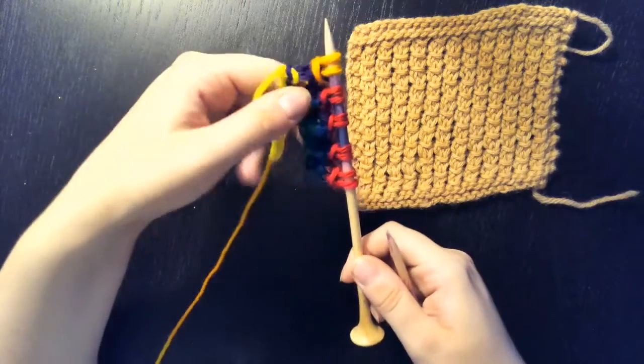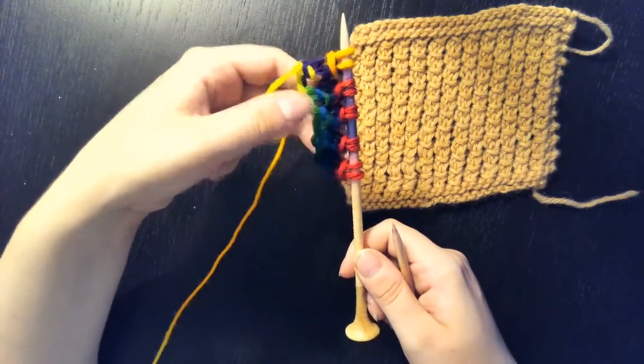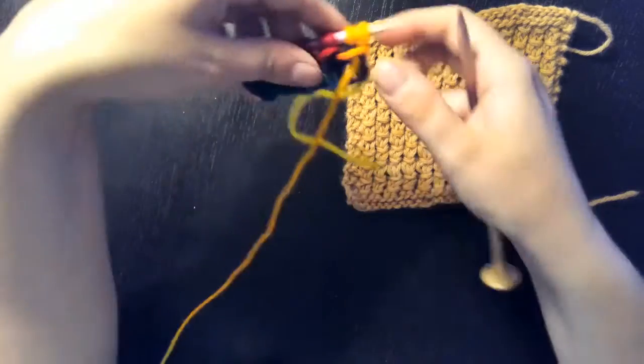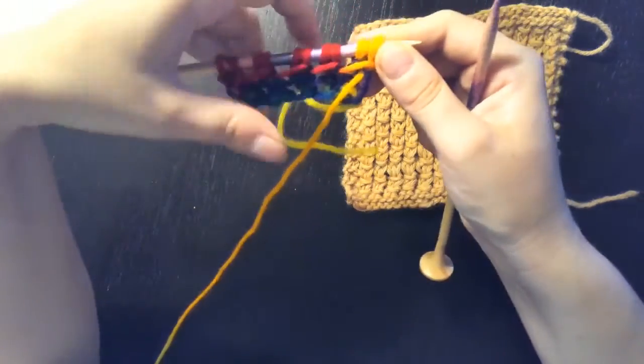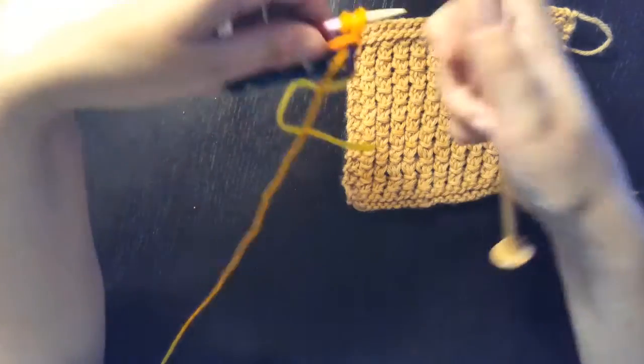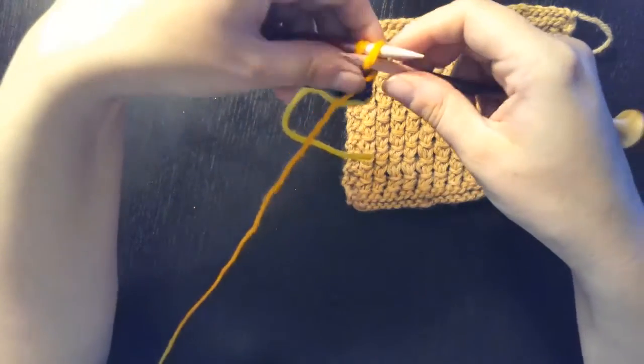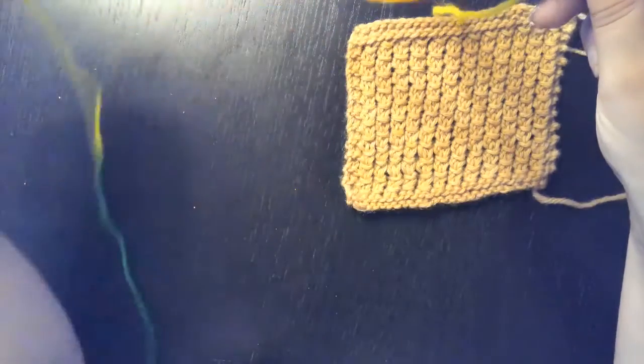Now your next row for row two, it's just going to be purl. So this is just an easy, simple row, depending on your relationship with purling. If you're new to knitting, purling might still be a little tricky for you.